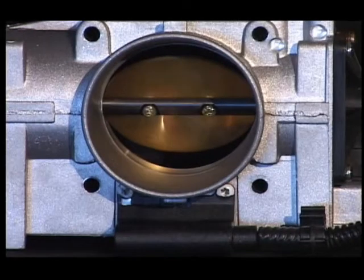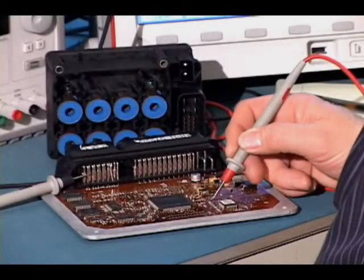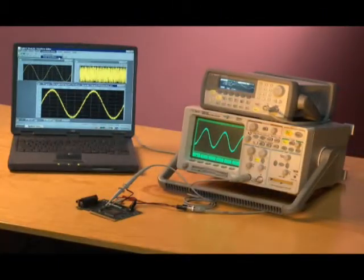The 33220A from Agilent Technologies is a compact 20 MHz arbitrary function generator. It is the ideal choice where signal integrity, functionality, ease of use, and connectivity are of primary importance.